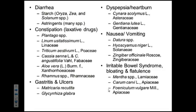For gastritis and ulcers, here are some commonly used medicinals. Matricaria recutita — which family? What is the common name of that plant? It's in the Asteraceae family — the daisy family. It's chamomile.